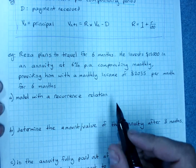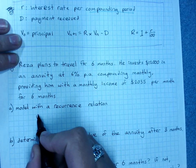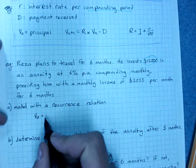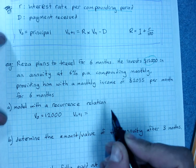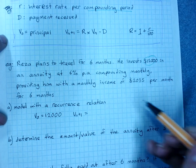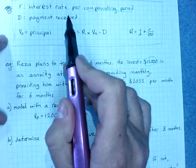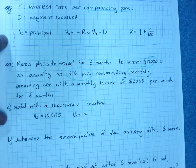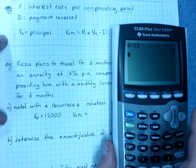Model this with a recurrence relationship. So using this, V0 is our principal. That's our main investment amount. The n plus 1 is... Now we've got to work out R. I have 6% per annum. I have to take that to the interest rate per compounding period. We're compounding monthly. So I'm going to take my 6% interest rate and divide by 12 to find my monthly interest rate of 0.5%.